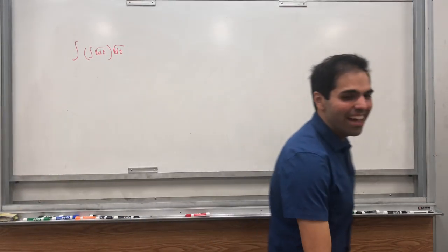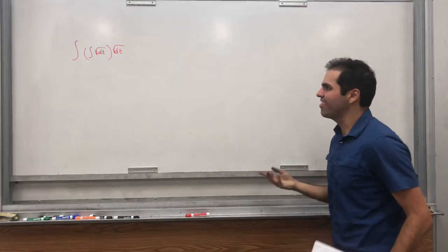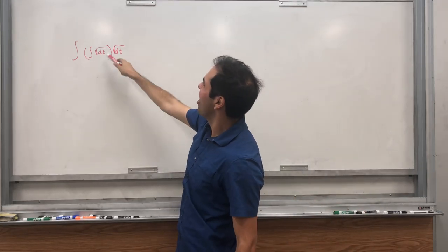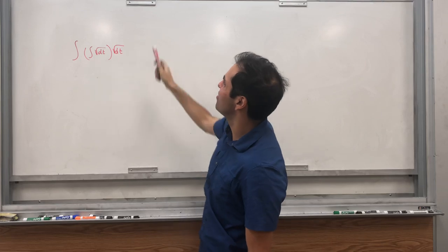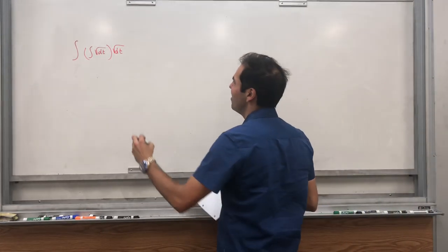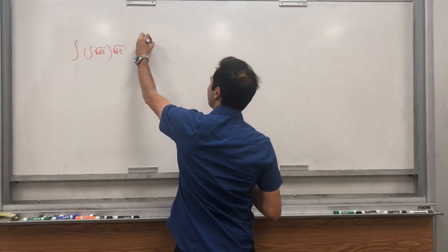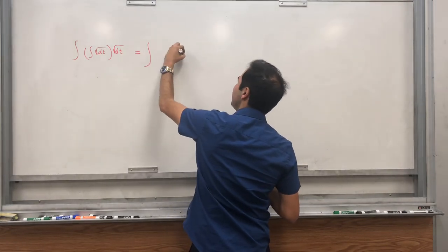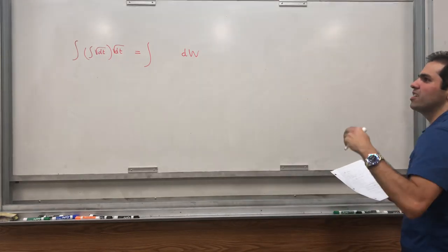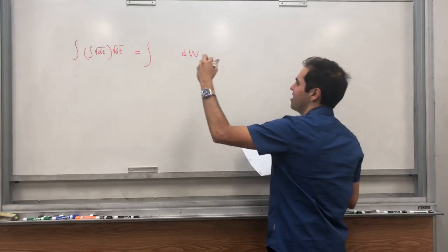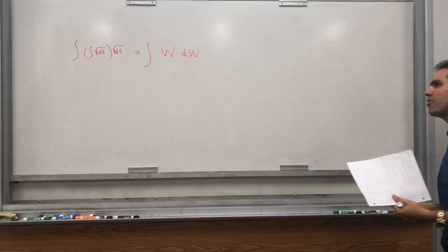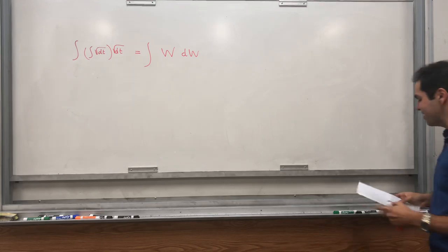All right, thanks for watching. Today I want to evaluate another crazy integral, which is the integral of square root of dt, with respect to square root of dt. In my previous videos, square root of dt is another name for dw, and the integral of square root of dt I just like to call w. So today we will see what the integral of w dw is.